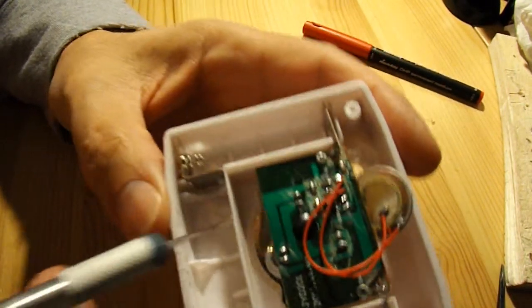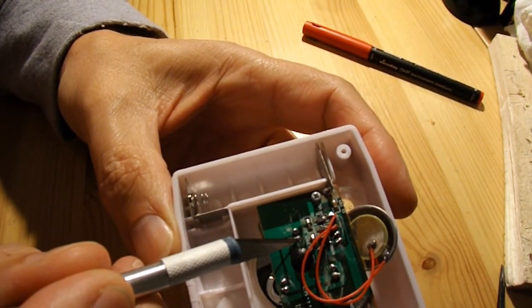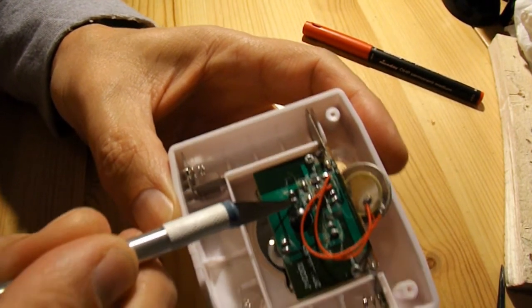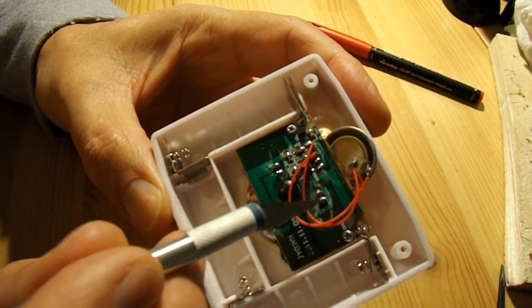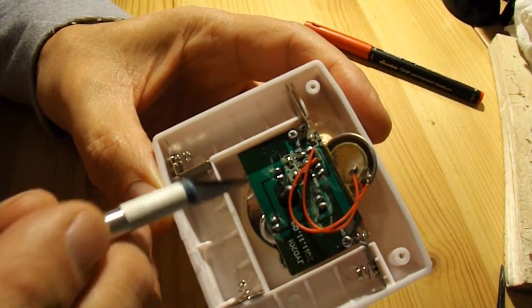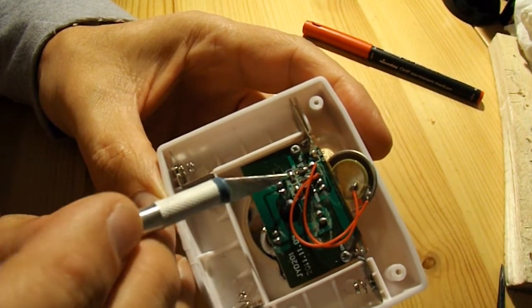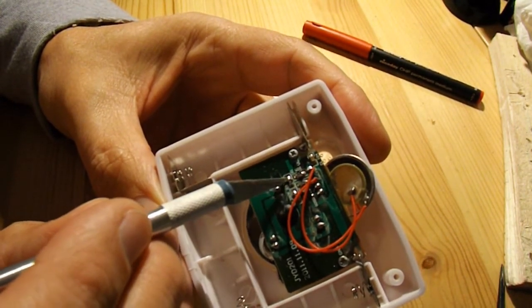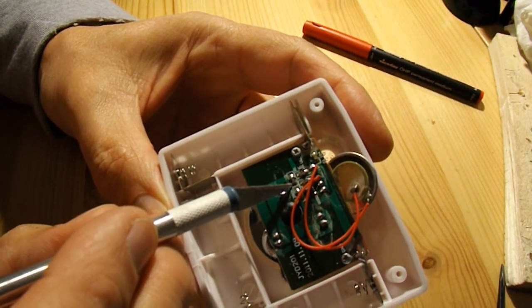Basically those two solder points at the back of an LED, they're all in parallel, and just there is a little 100 ohm resistor.